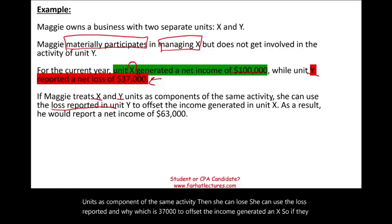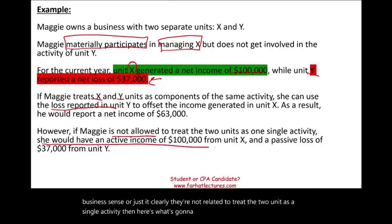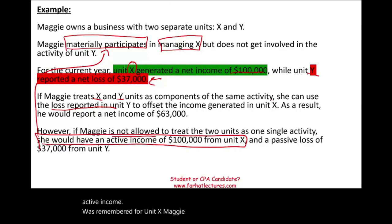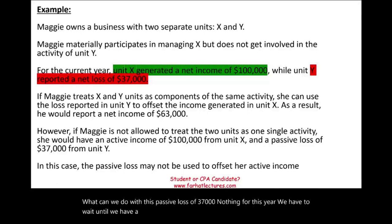However, if it doesn't make business sense to treat the two units as a single activity, then Maggie will have $100,000 of active income from unit X — where she is materially participating — and a passive loss of $37,000 from unit Y. What can we do with this passive loss of $37,000? Nothing for this year. We have to wait until we have passive income to offset the loss, so we carry it forward to a future year.